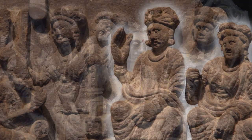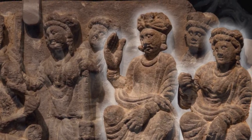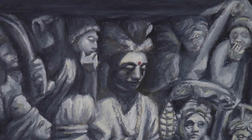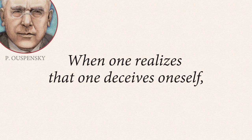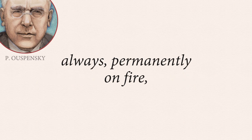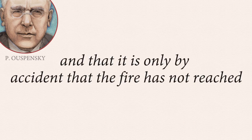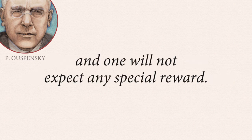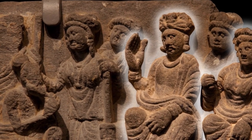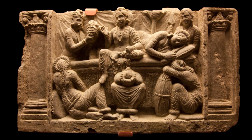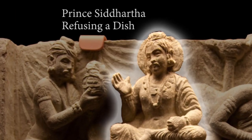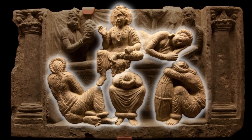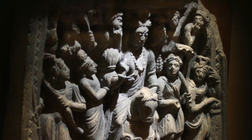Disillusioned, Siddhartha finally asks his father permission to depart forever. The king refuses to let his son go. Siddhartha begs his father: "It is wrong to lay hold of one who would escape from a house that is on fire." When one realizes that one deceives oneself, that one is asleep and one's house is on fire — always, permanently on fire — and that it is only by accident that the fire has not reached one's room at this very moment, when one realizes this, one will want to make efforts to awake. That night, the king arranges the most lavish feast, hoping to revive his son's interest in palatial life. Repelled, Siddhartha falls asleep, and when he wakes up in the middle of the night, he finds the entire palace in deep slumber. Looking at the sleeping dancers and servants, he formulates a firm desire to depart from this artificial world.